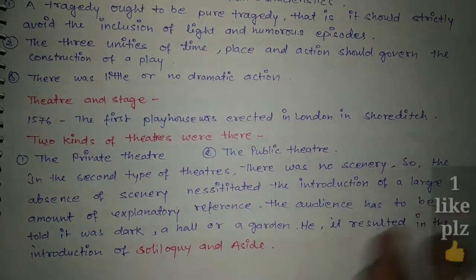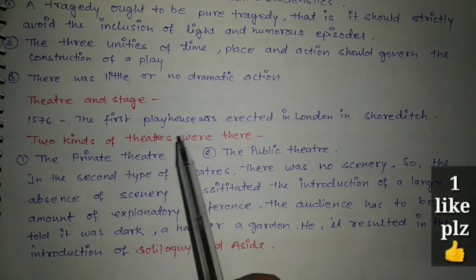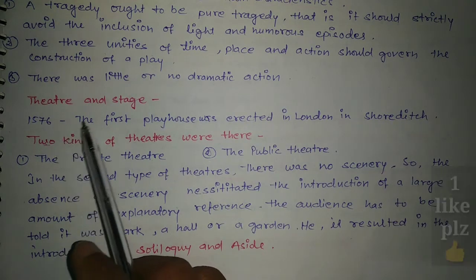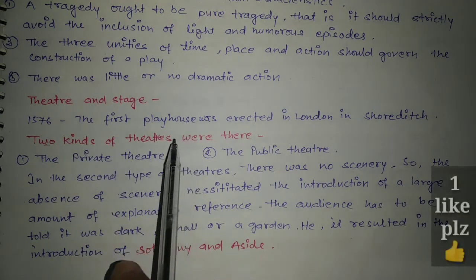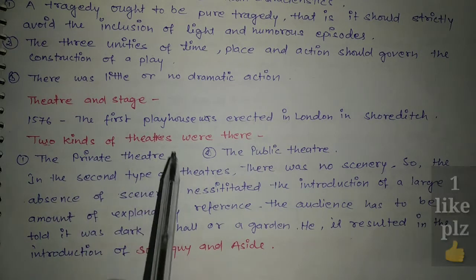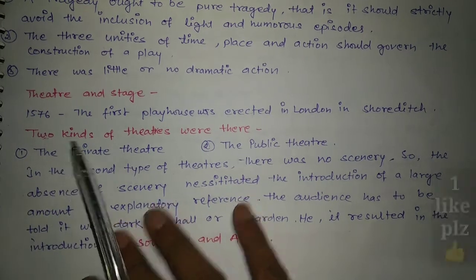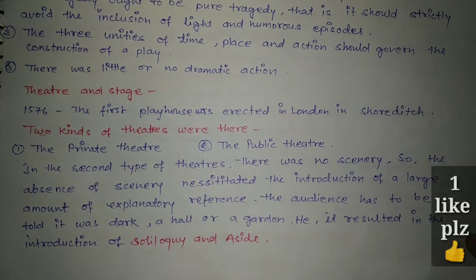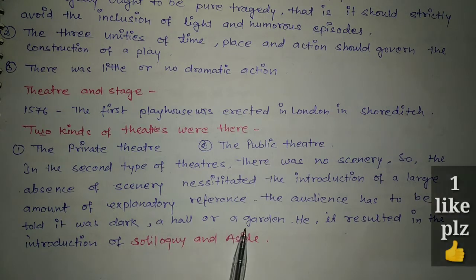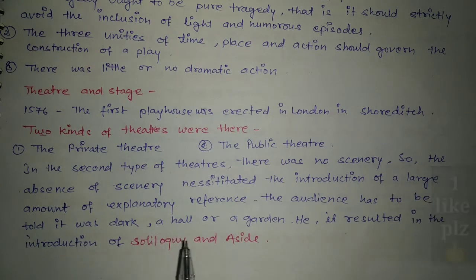In 1576, the first playhouse was erected in London in Shoreditch. 1576 was the year when the first playhouse was built. There were two kinds of theaters: first, the private theater; second, the public theater. In the public theater, there was no scenery, so the absence of scenery necessitated the introduction of a large amount of explanatory reference — the audience had to be told whether it was dark, or a hall, or a garden.